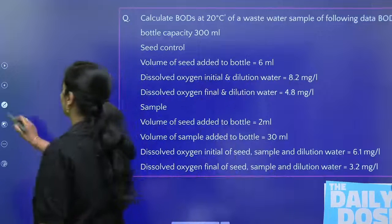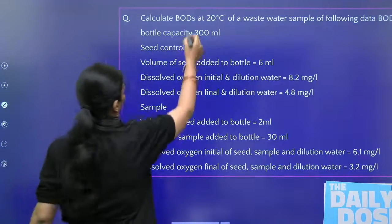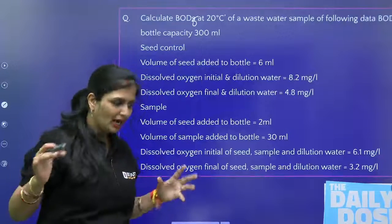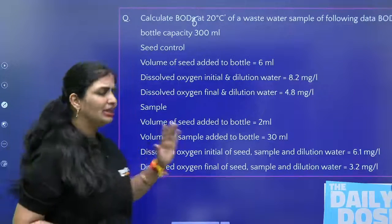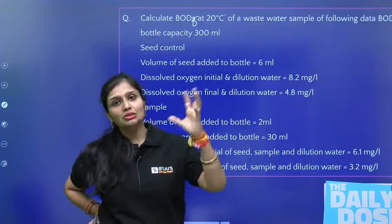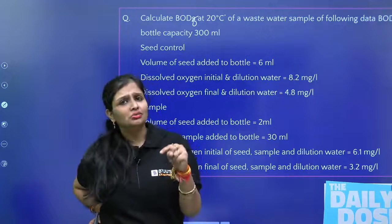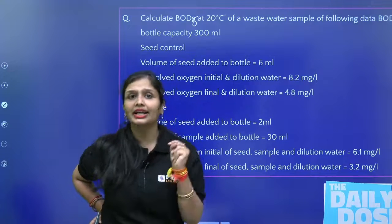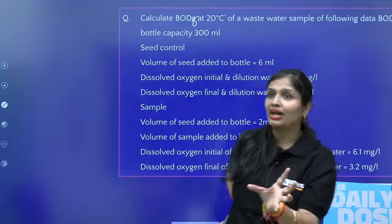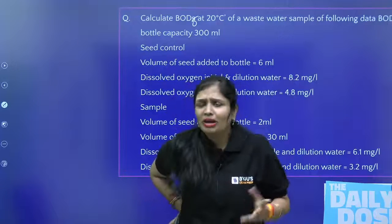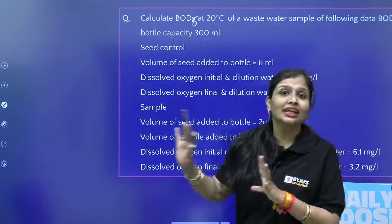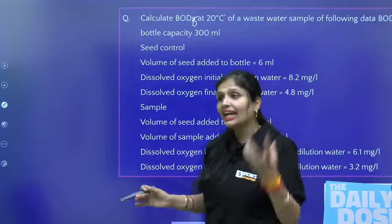Come on guys, for this question we will pause first, you will solve it from your side, and then we will solve this question together. Now you have to calculate 5-day BOD at 20 degrees Celsius. You need to understand seed control. When you add microorganisms in water, why do you do it? Because there are no microorganisms originally present in the water, so you add microorganisms to consume the organic matter.